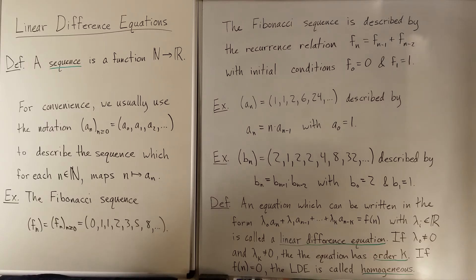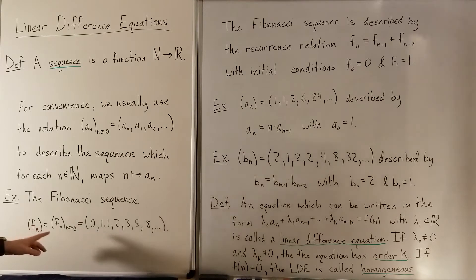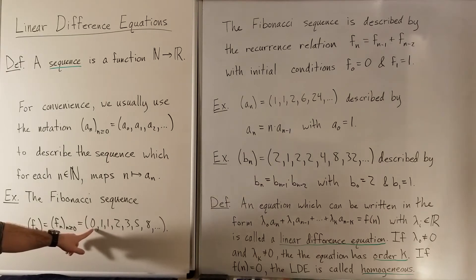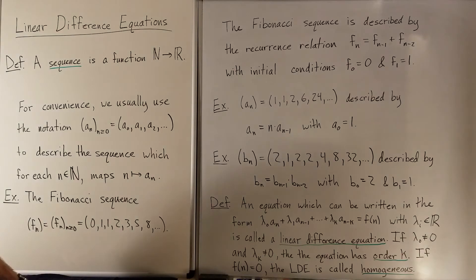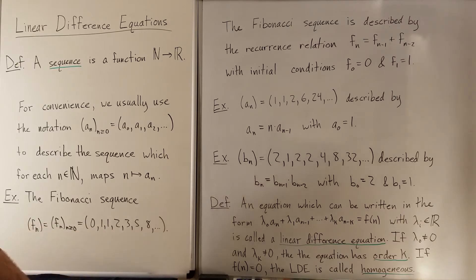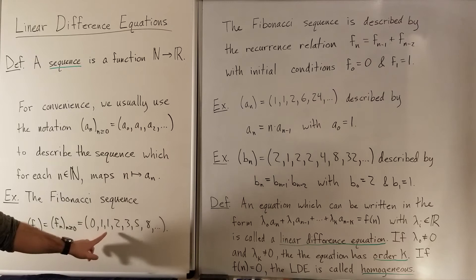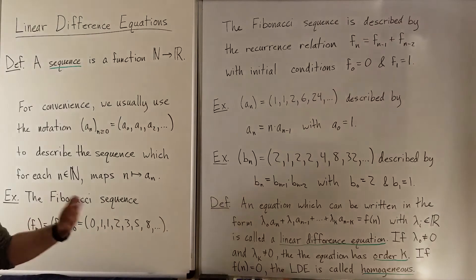A very common sequence to start out with is the Fibonacci sequence, normally described as f_sub_n, just for Fibonacci. This is the sequence that starts out with 0, 1, 1, 2, 3, 5, 8, etc. The way you get to the next term in the sequence is you take the previous two terms and add them together. So to get this one, you take 0 and 1 and add them together; this 2 comes from 1 plus 1; the 3 comes from 1 plus 2, etc.